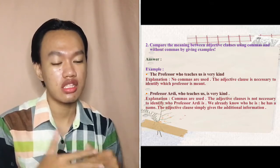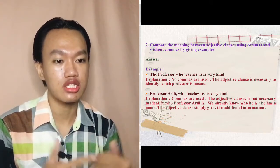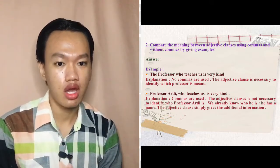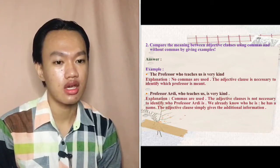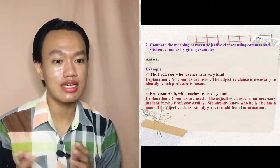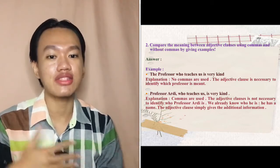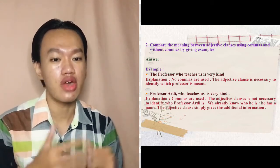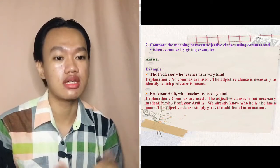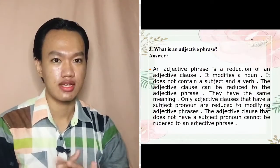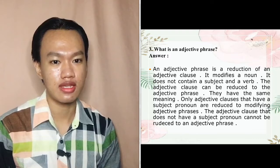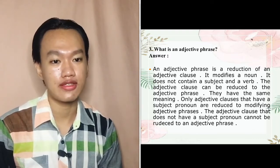My explanation of the second example: commas are used. The adjective clause is not necessary to identify who Professor Rd is — we already know who he is because he has a name. The adjective clause simply gives additional information.